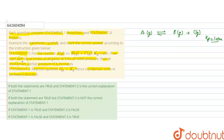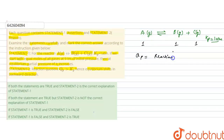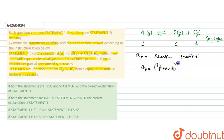It is also given that we start with equal number of moles — let's say 1 mole of each gas. The reaction quotient Qp at any time is the partial pressure of products raised to their stoichiometric coefficients divided by the partial pressure of reactants raised to their stoichiometric coefficients.